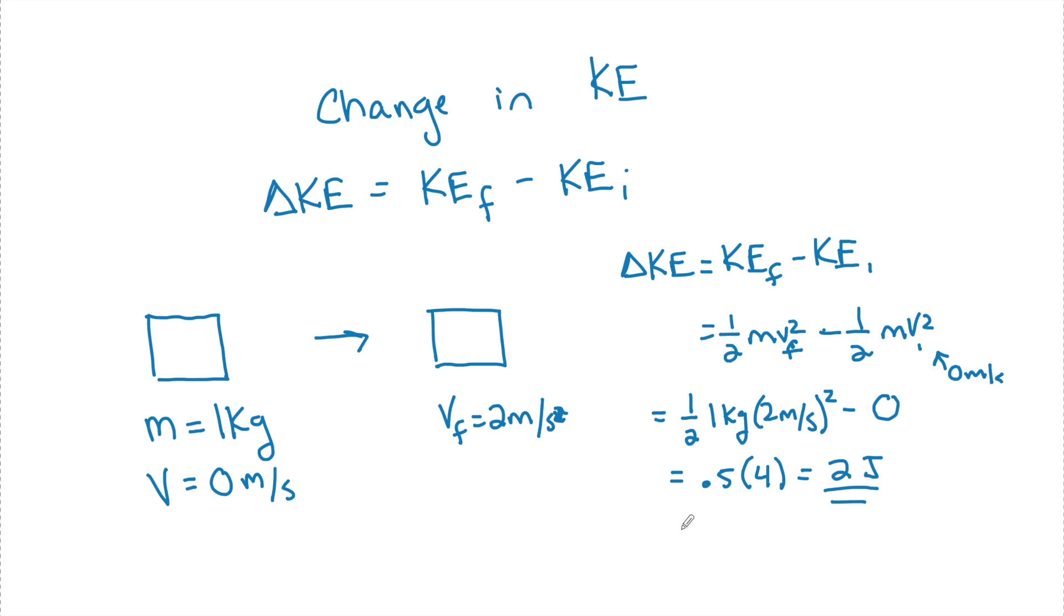And the beautiful thing about this is this is also equal to the work done. Because work, we will now see, is equal to a change in energy as well as fx cosine theta. So now we see this delta E right here. So not only can I ask for what is the change in kinetic energy, but I can ask what was the work done to accelerate this object.